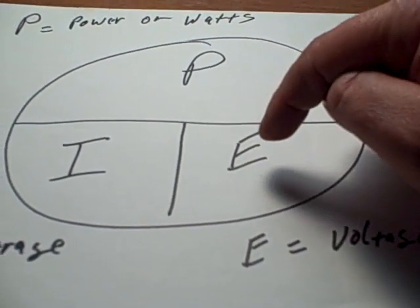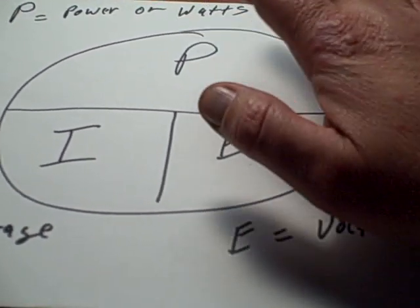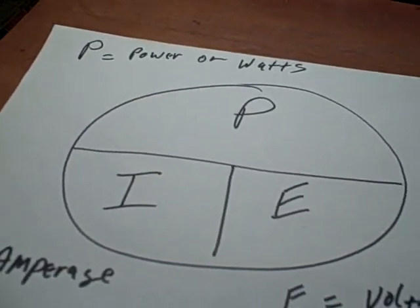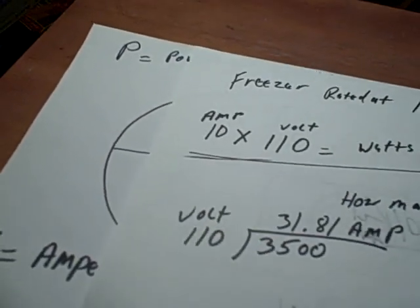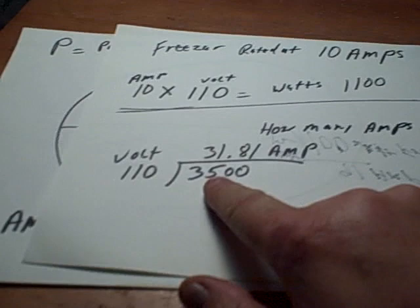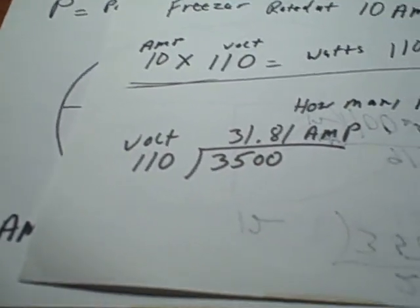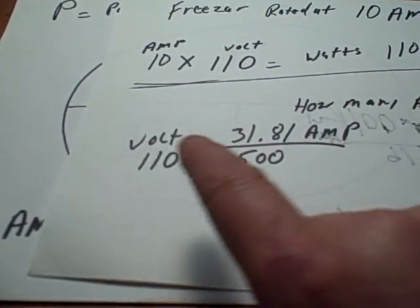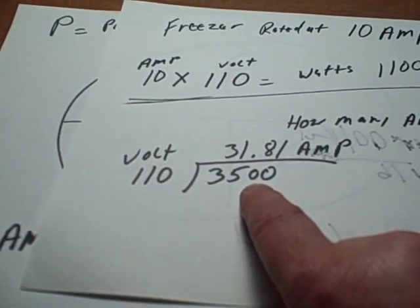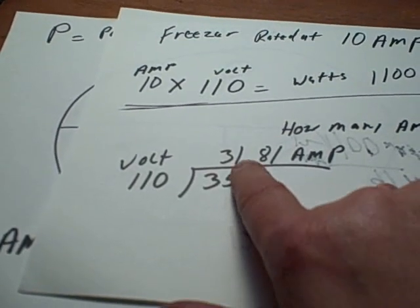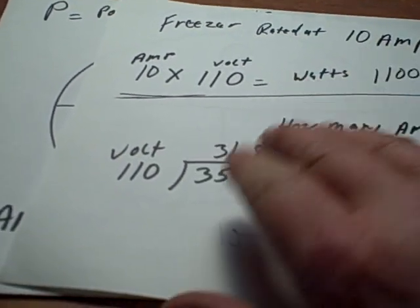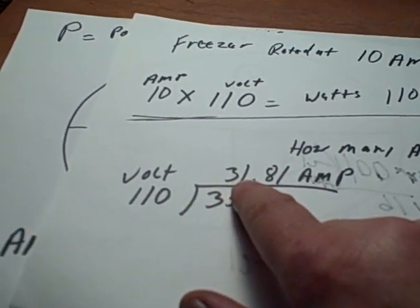I've done that here on this sheet. Okay, here's where I did it. At 110 volts I have a 3500 watt generator. That will give me at full load, of course there's a 4000 peak but we're not counting that, they give me about 31 amps, 31.8 amps.